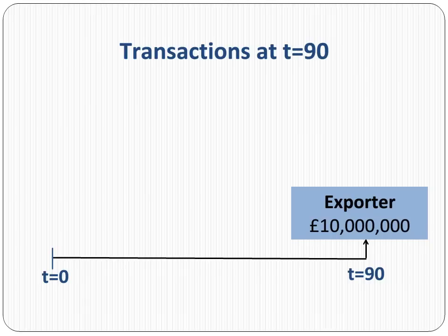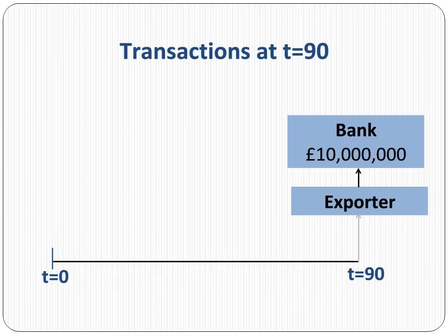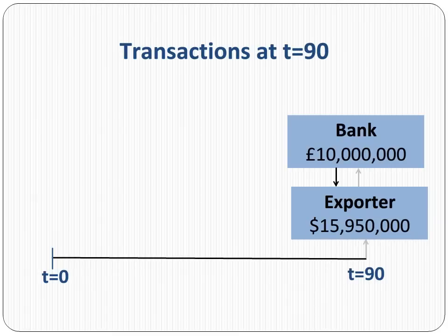Now let's fast forward to T equals 90. If everything goes as expected, the exporter receives 10 million pounds from the UK importer. The exporter delivers the amount to the bank per the forward contract, and the bank delivers the agreed upon amount of $15,950,000 to the exporter.